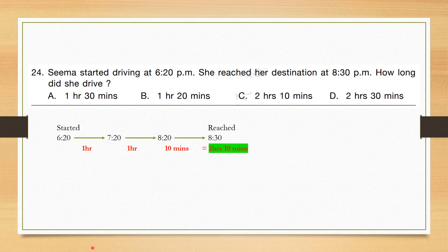Question number 24: Seema started driving at 6:20 pm and reached her destination at 8:30 pm. How long did she drive? From 6:20 pm to 7:20 pm is 1 hour; 7:20 pm to 8:20 pm is another 1 hour; and 8:20 pm to 8:30 pm is 10 minutes. Total: 2 hours 10 minutes. Correct answer is option C.